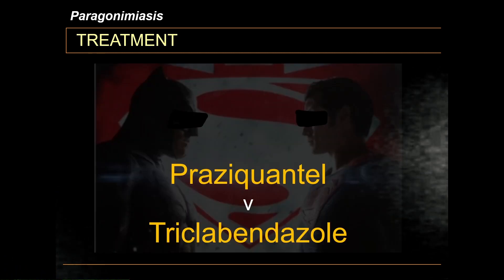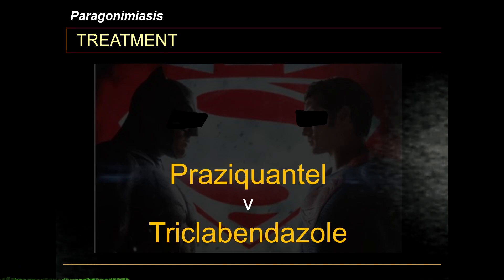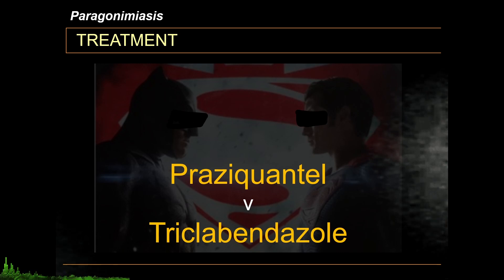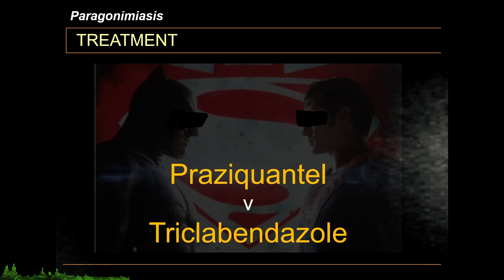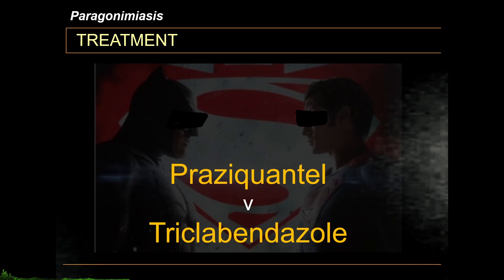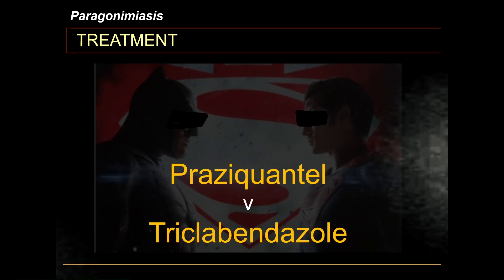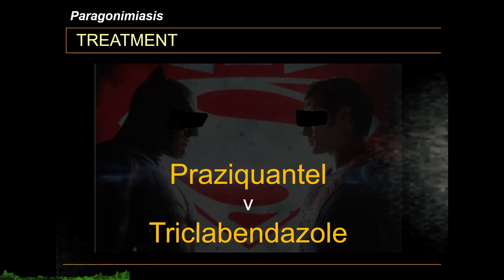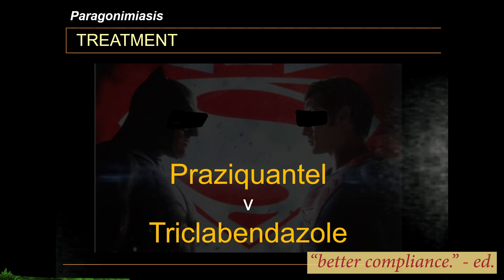The treatment of Paragonimiasis has evolved. Initially, the drug of choice was Praziquantel. More recently, the World Health Organization recommends triclabendazole. The efficacy of both drugs is the same; however, dosing differs. Praziquantel is given three times a day for three days, while triclabendazole is given two times a day for only one day, making it simpler and producing better compliance.